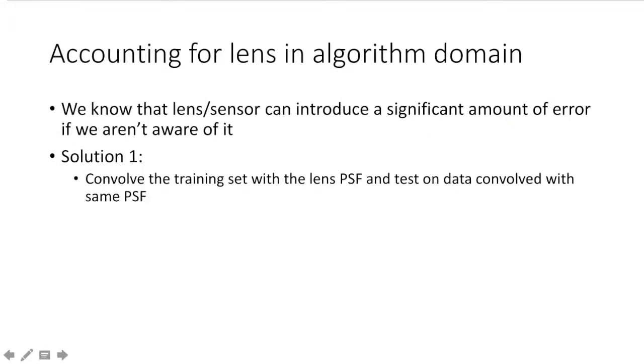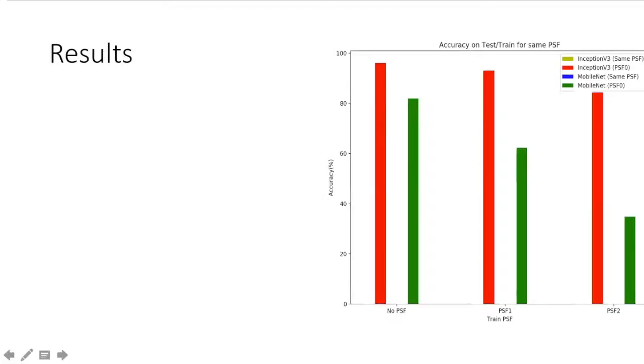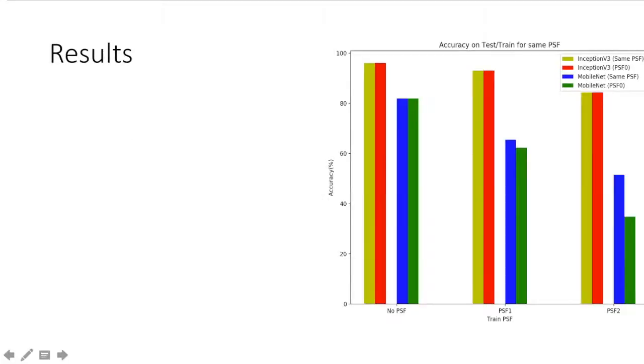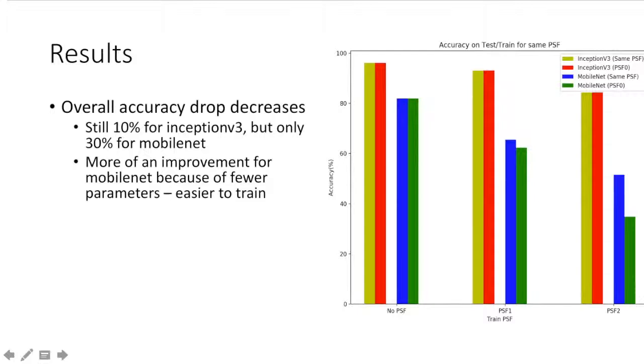If we're aware that the lens and sensor can introduce a significant amount of error, one of the potential solutions is by training our algorithms on image data that's also been forward modeled through the optical system. In order to replicate that in this experiment, we can convolve our training set with the lens PSF and then rerun our tests on data that's been convolved with the same PSF. The yellow bars represent what happens when we train Inception v3 on the same PSF, and the blue bar represents what happens when we train MobileNet on the same PSF. Overall, we can see that the algorithm accuracy improves. However, algorithms trained on weaker optical systems are not able to recoup all of the accuracy just through optics-aware training. This suggests that some optical systems are just intrinsically easier to work with. The drop for Inception v3 is roughly 10%, but it's now only about 30% for MobileNet.